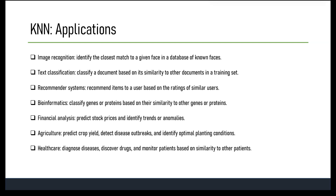In financial analysis, KNN can be used for predicting stock prices, identifying trends, and detecting anomalies by classifying stocks based on similarity to others in the training set. In agriculture, KNN can predict crop yield, detect disease outbreaks, and identify optimal planting conditions by classifying crops based on similarity to others. In healthcare, KNN is used for disease diagnosis, drug discovery, and patient monitoring. Overall, KNN is a versatile algorithm applicable to various fields requiring pattern recognition, classification, and prediction.